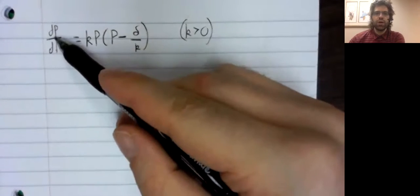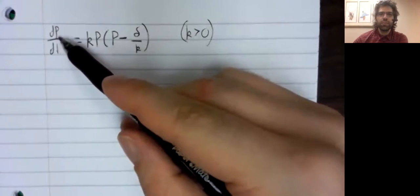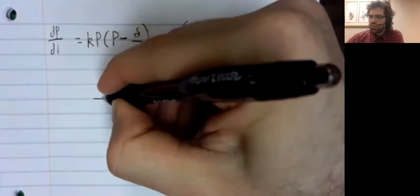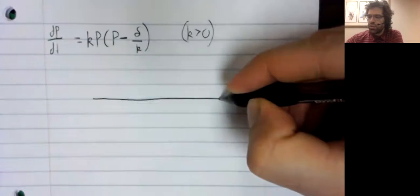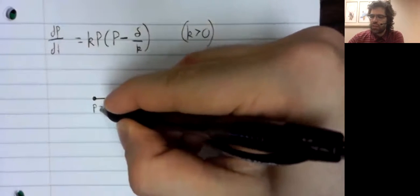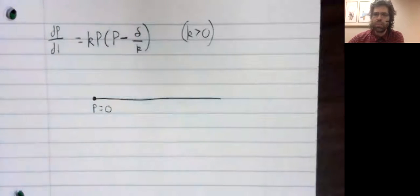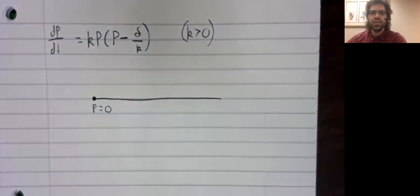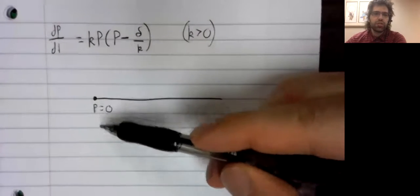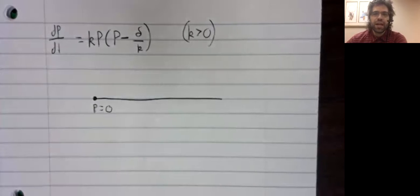We observe that there are two values where the derivative is zero. And since the derivative is the rate of change of the population, those values correspond to the population not changing. One of those makes clear intuitive sense. If the animals have gone extinct, the population remains at zero and neither grows nor shrinks.